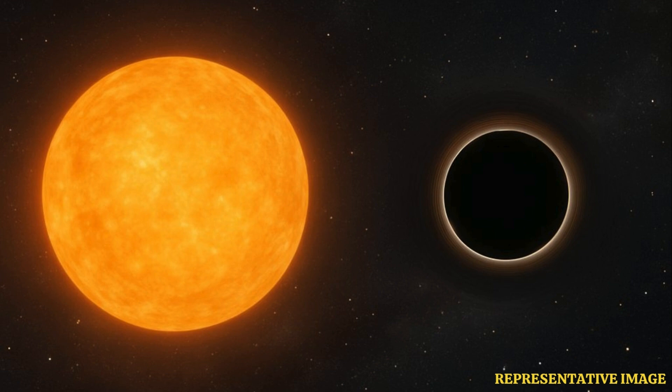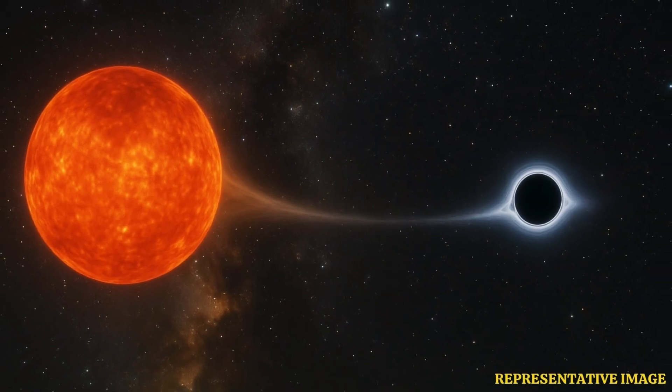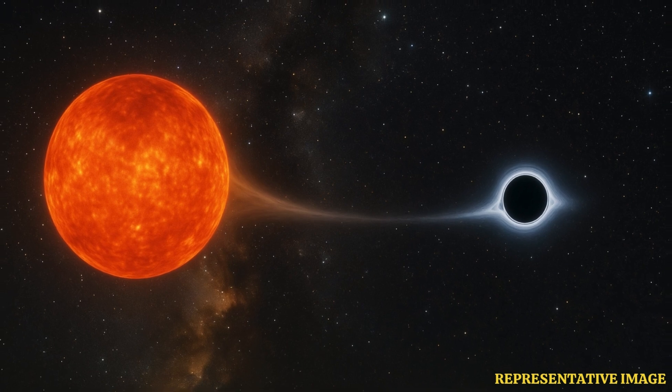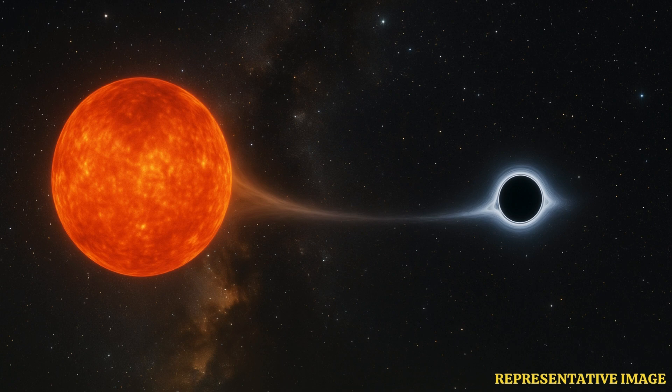So there was this gap where we didn't see objects. Exactly. We saw neutron stars up to a certain mass and then black holes starting at a significantly higher mass with almost nothing in between. Finding the unicorn there is surprising. So it challenges the theories. It definitely does. It suggests maybe stars can collapse into black holes in ways or under conditions we hadn't fully considered.